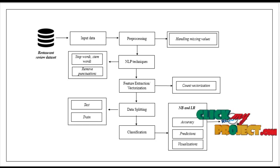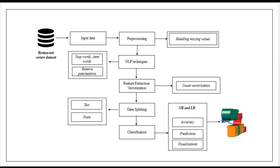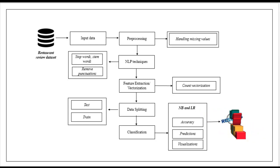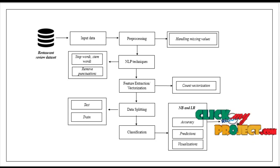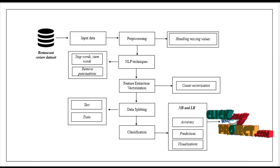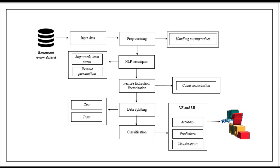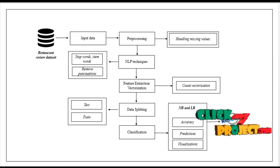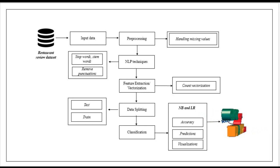After that, we implement feature extraction or vectorization. Here we implement count vectorization, where our text is converted into numerical vectors for machine readability. The next module is data splitting, where we split the whole dataset into test and train sets. The test set is used for prediction and the train set is used for evaluation, based on a defined ratio. Then comes the classification model, where we implement two different machine learning algorithms: Naive Bayes and Logistic Regression.